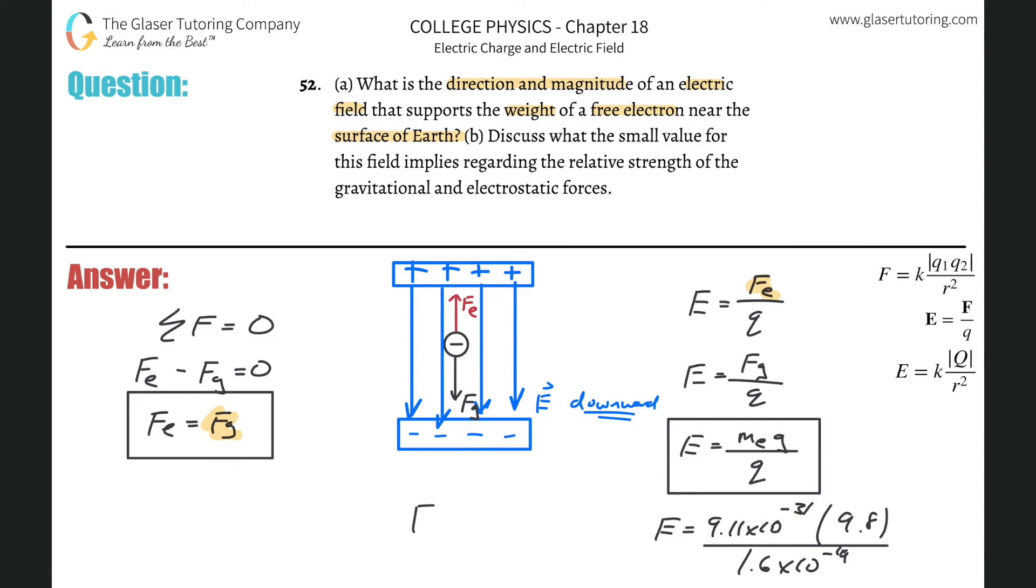And now, all we have to simply do is just throw it on into the calculator, and voila. So it's 9.11 times 10 to the minus 31 times 9.8, all divided by then 1.6 times 10 to the minus 19. And this is going to be about, this is 5.58 times 10 to the minus 11. And what is that? That's going to be in Newtons per Coulomb. So that's the electric field strength there.